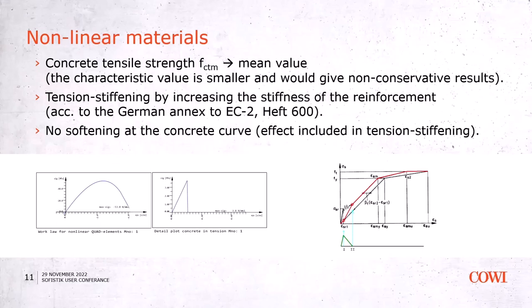It's important to consider tension stiffening. Tension stiffening is the contribution to system stiffness given by the concrete between cracks. In SOFISTIK, the model used comes from the German national annex to the Eurocode. It takes the steel stress-strain curve as a starting point and lifts it — increases the stiffness of the steel reinforcement — to take into account tension stiffening. So tension stiffening is included in the analysis by adjusting the stiffness of the reinforcement.